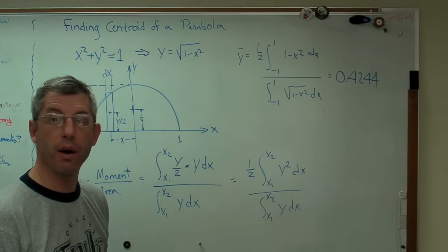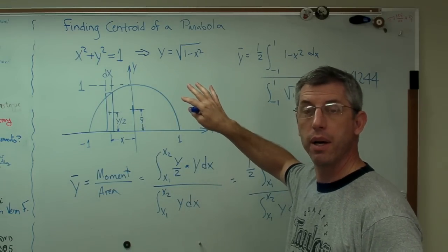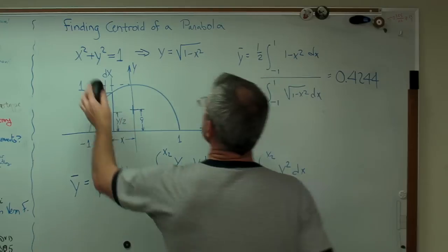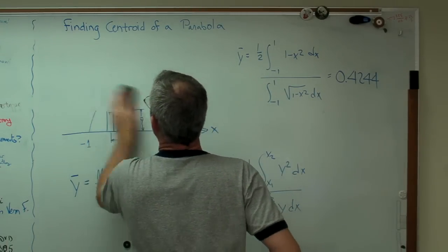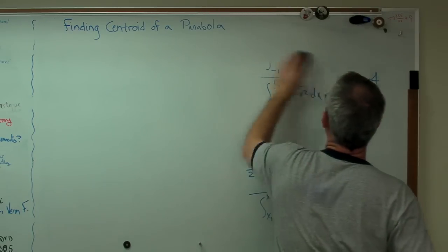So now that we know that, we can go ahead and do a parabola. So I'm going to erase this. I've got a parabola all made up. I'm going to use one particular parabola, but you can use any parabola. And we'll go ahead and find the centroid of that parabola.